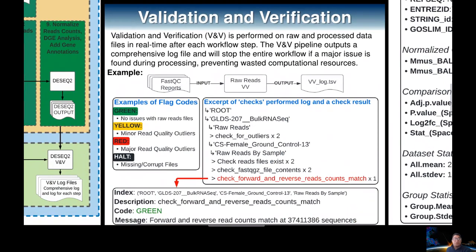The VNV workflow is built on a framework written in Python. It runs after each major step and has two major goals. First, keeping a detailed log of VNV checks on the raw and processed data, including notable observations like outliers. Second, to recognize egregious issues during processing — like corrupt files — and halt processing, saving computational resources and allowing manual intervention.